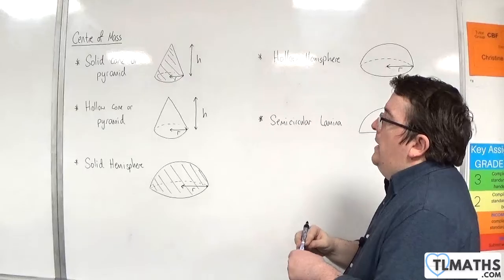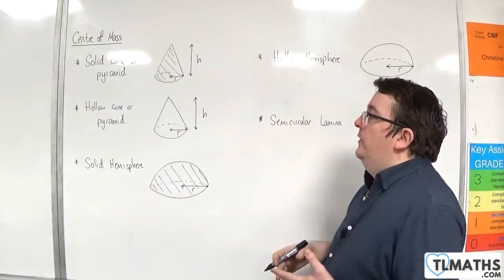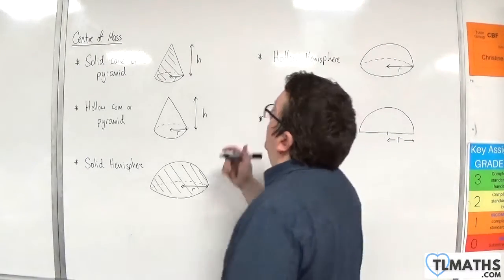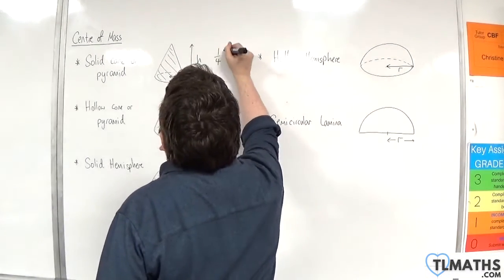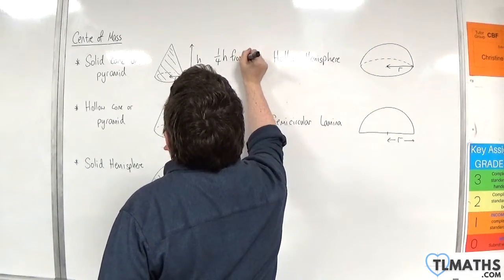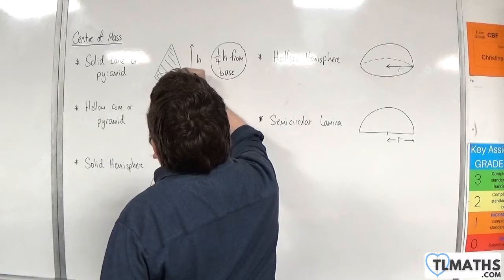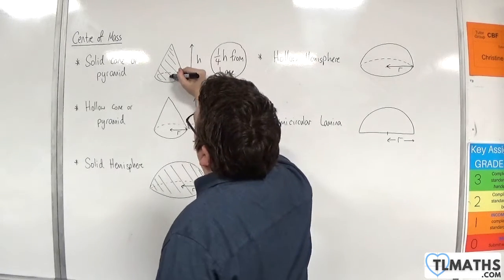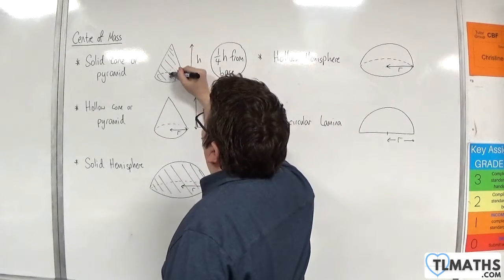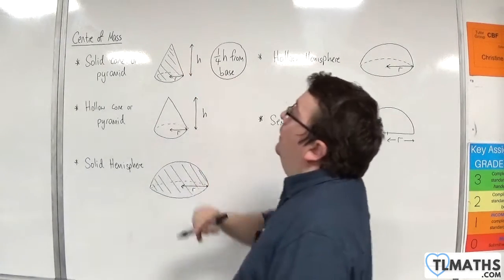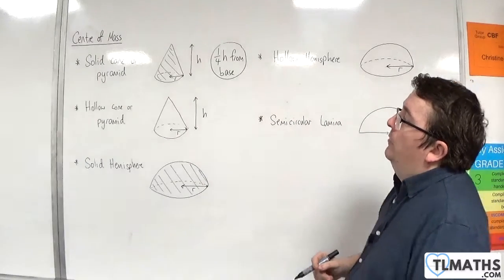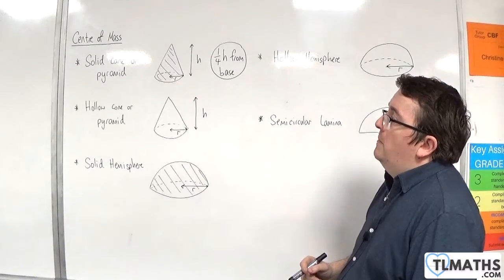So for a solid cone or a pyramid, the position of the center of mass is one quarter times H from the base. So from the base and the center of that circle, one quarter of the way up, one quarter H of the way up to the top of the cone, that will be where your center of mass is.